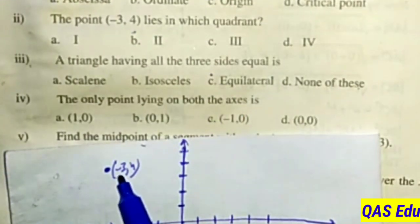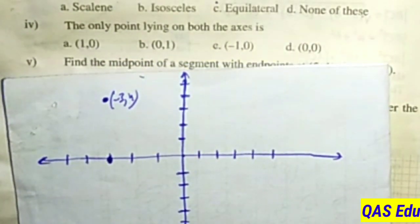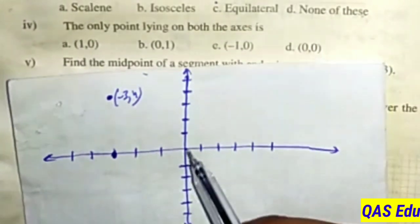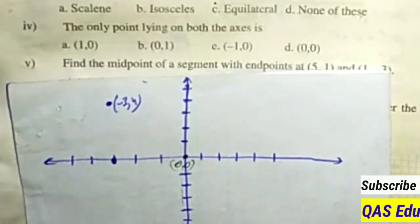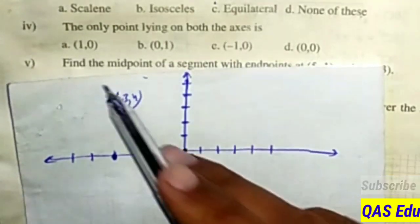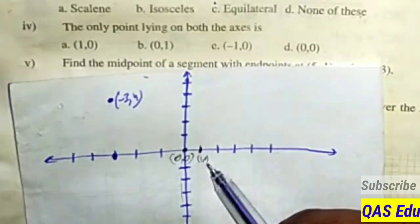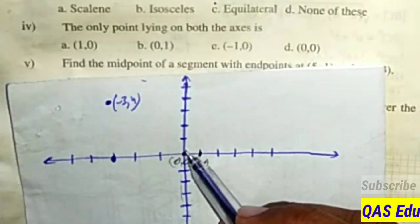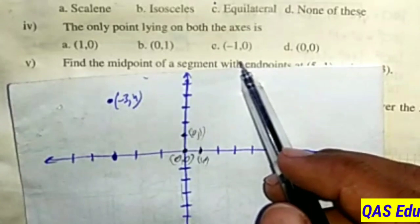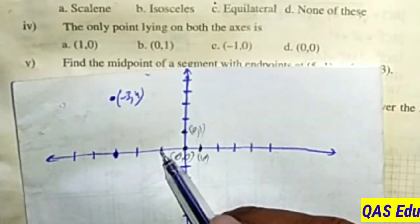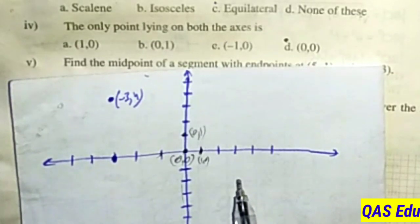The only point lying on both the x-axis and y-axis is the origin. The origin is where x-axis equals y-axis, with coordinate (0,0). If we test zero for both x and y, we get the point (0,0). The correct option is D.